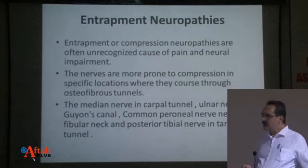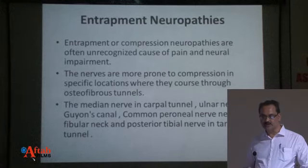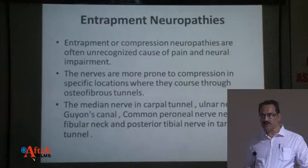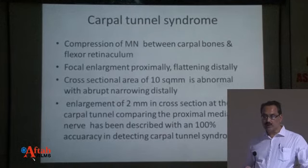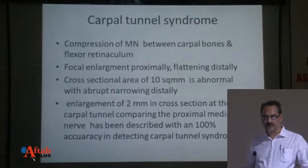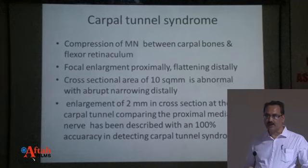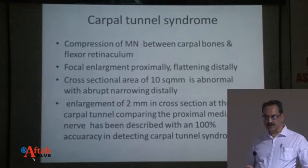Entrapment or compression neuropathies are often an unrecognized cause of pain and neural impairment. Nerves are more prone to compression in specific locations where they course through osteofibrousus tunnels — commonly the carpal tunnel for median nerve, Guyon's canal for ulnar nerve, the fibular neck for common peroneal nerve, and the tarsal tunnel for posterior tibial nerve. Median nerve compression between carpal bones and the flexor retinaculum is the commonest pathology. A cross-sectional area of 10 square millimeters is abnormal, and enlargement of more than 2 millimeters compared to proximal or distal segments is 100% diagnostic.